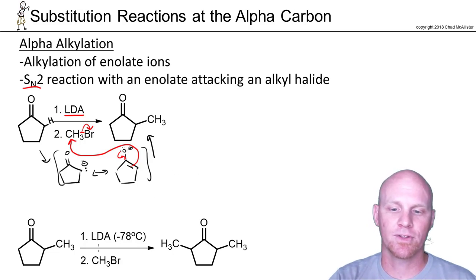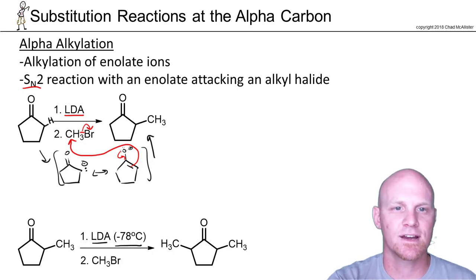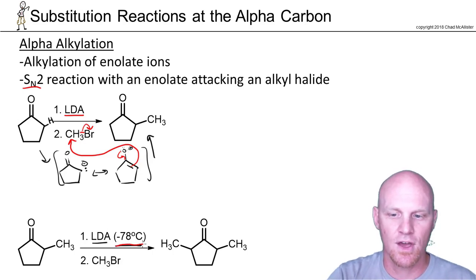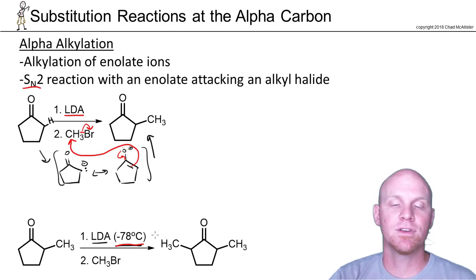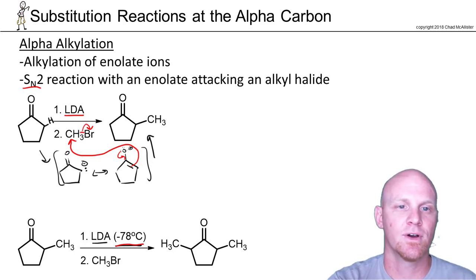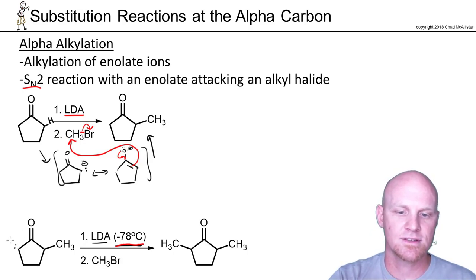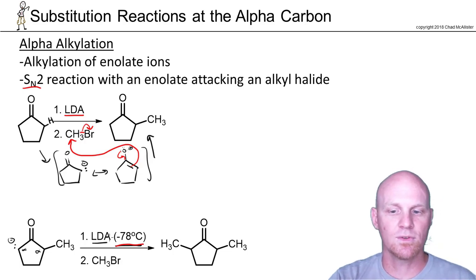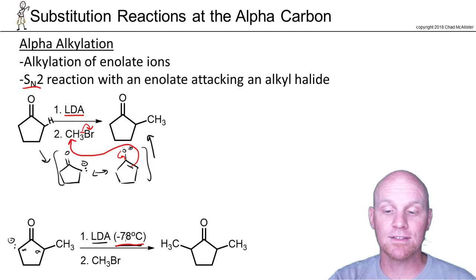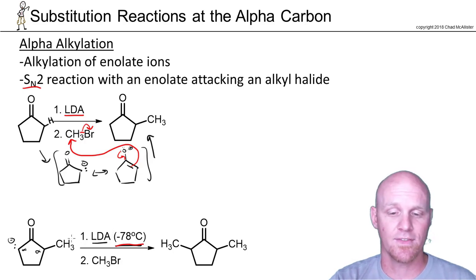One thing to note: we talked about LDA a little bit earlier. Oftentimes we'll show this temperature setting of negative 78 degrees Celsius. We just want to remind you that it's a bulky base, and at low temperatures it'll deprotonate on the less-substituted side. So if we're going to form an enolate and the alpha carbons are not equally substituted, when you use LDA — generally at low temperatures — you're going to form it on the less-substituted side.